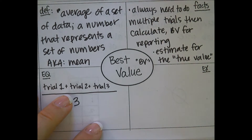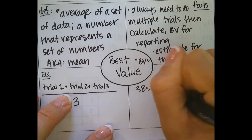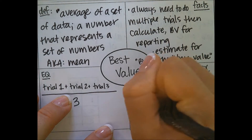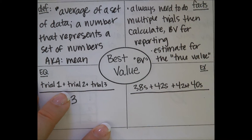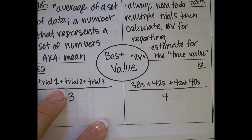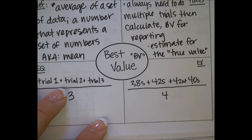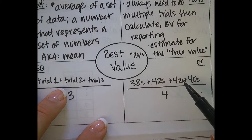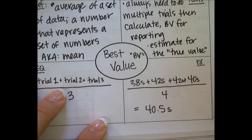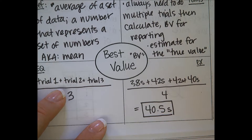For our best value example, if I had four trials with times of 38 seconds, 42 seconds, 42 seconds, and 40 seconds — how many trials would I have done? Four. So what number would I divide by? Four. Any time we report a number, we report its unit of measurement with it. So 38 + 42 + 42 + 40 seconds divided by four gives an answer of 40.5 seconds. I usually like to put a box around the answer to separate it from the rest of the numbers.